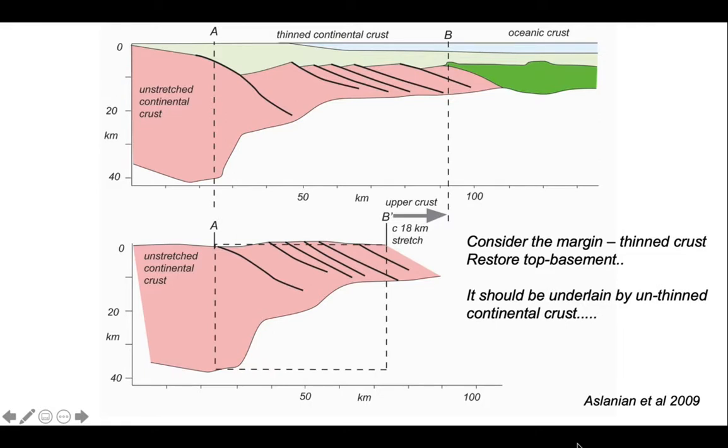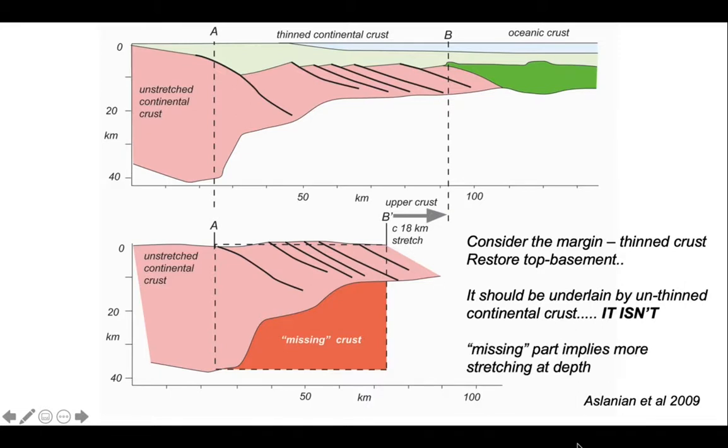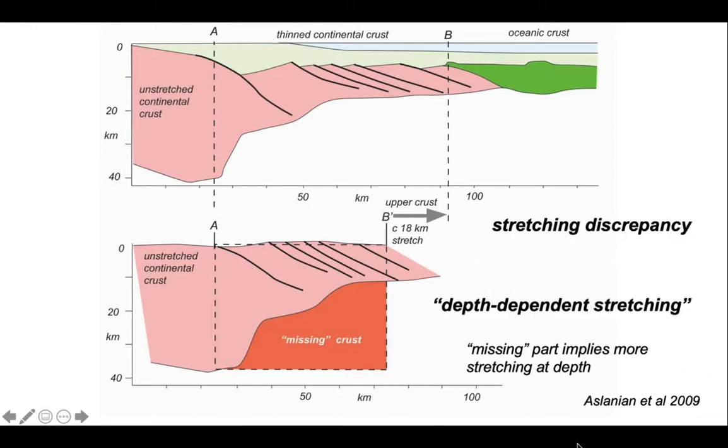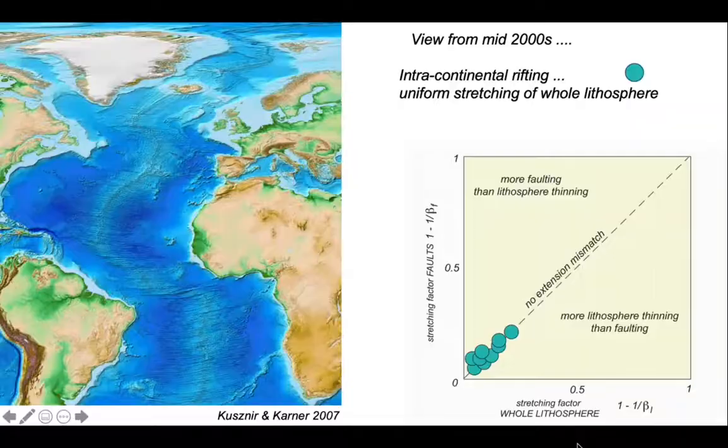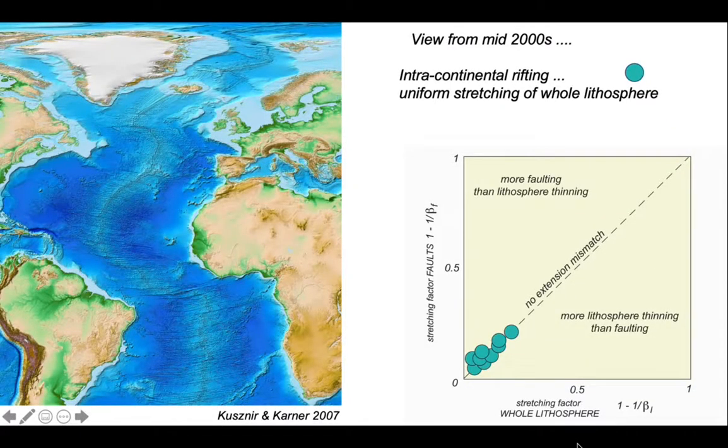There's a mismatch in this restoration. The missing part of depth implies that there's been more stretching in the crust as a whole than is represented by the top of the crust as reflected in the reconstruction of the faults. This is an example of the stretching discrepancy. It implies that the amount of stretch changes with depth. Some people coin the term depth-dependent stretching for this. Let's go back to the plot created by Kusznir and Karner and use information from margins to compare with that we've plotted already for intracontinental rifting.